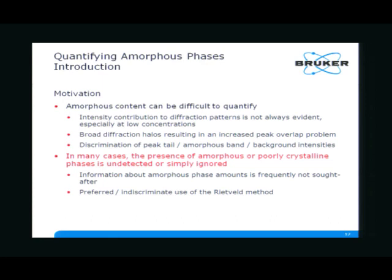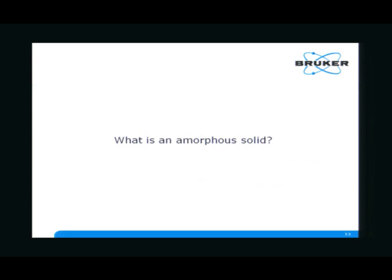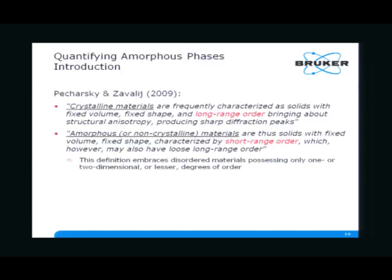This brings me to a very dangerous question. I've been at many pharmaceutical conferences and heard many discussions about what is an amorphous solid — I have no idea. I went through literature and pulled out a couple of definitions which are representative. For example: crystalline materials are characterized as solids with fixed volume, fixed shape, and long range order, producing sharp diffraction peaks. Amorphous or non-crystalline materials are solids with fixed volume and fixed shape but characterized by short range order, which however may also have loose long range order.